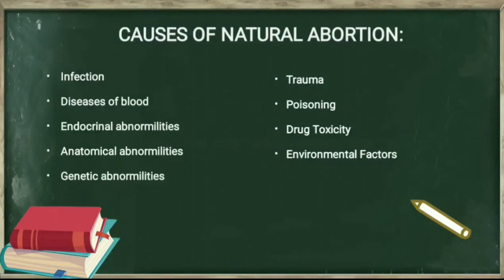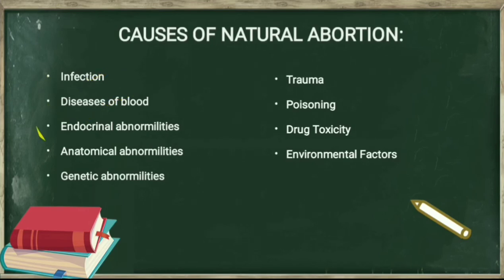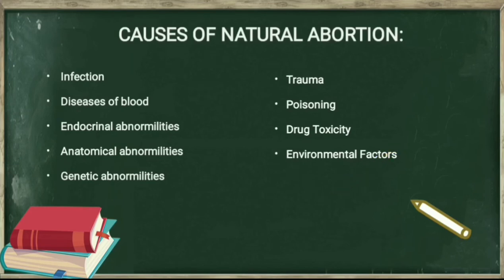Causes of natural abortion include: infection, diseases of blood, endocrinal abnormalities, endometrial abnormalities, genetic abnormalities, trauma, poisoning, drug toxicity, and environmental factors. All of these are the major causes of natural abortion.